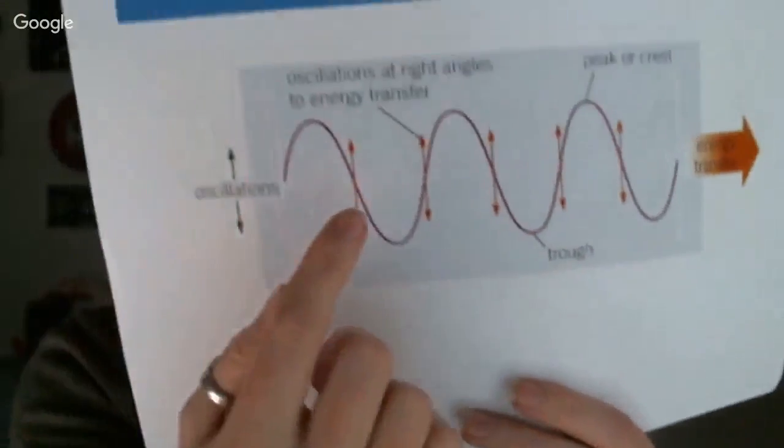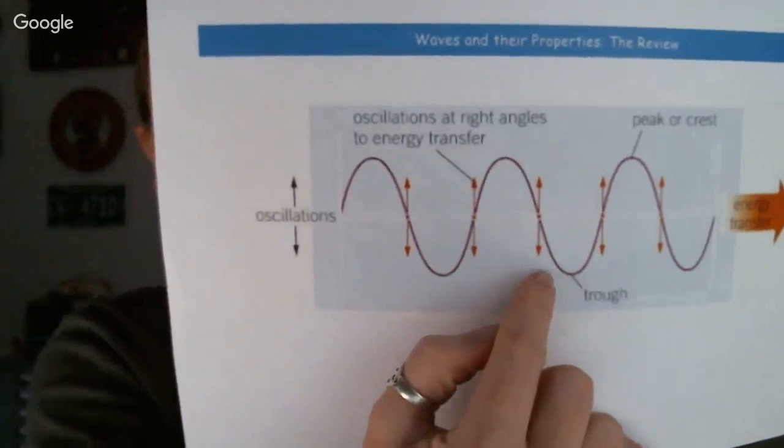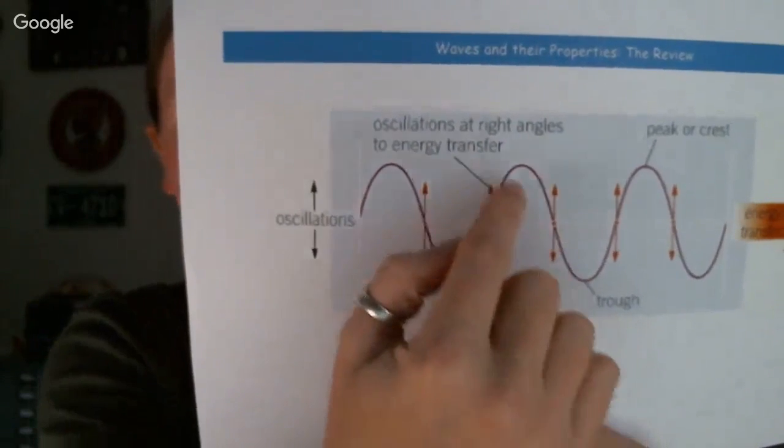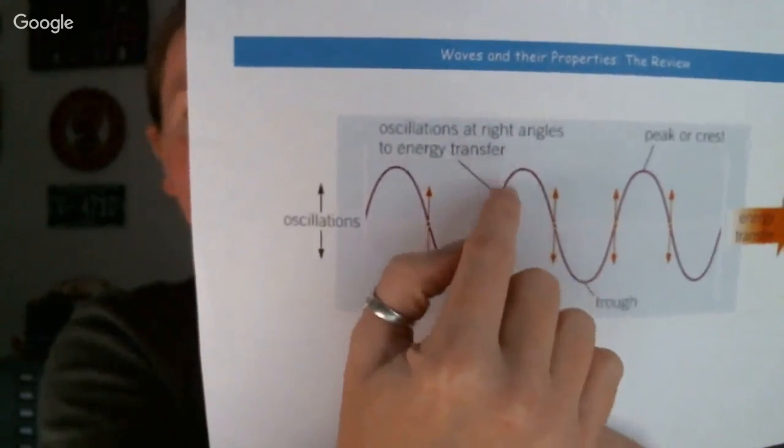From that diagram we need to recognize a couple of key features. The dips at the bottom are referred to as troughs, and the bits at the top — the hilly bits — are the peaks. As long as you remember those key facts, you should be okay on the initial parts of our wave topic.